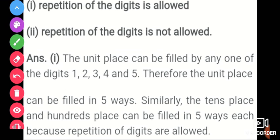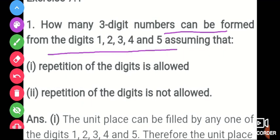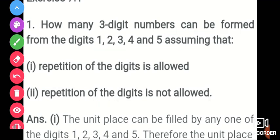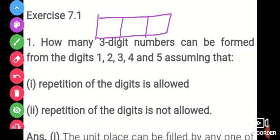Now the same question is: how many 3-digit numbers can be formed using the digits 1, 2, 3, 4, 5, assuming that repetition of the digit is not allowed? This means you have to create 3 blocks, but repetition is not allowed. For the first block — the hundreds place — we have 5 digits, so we can fill it in 5 ways.